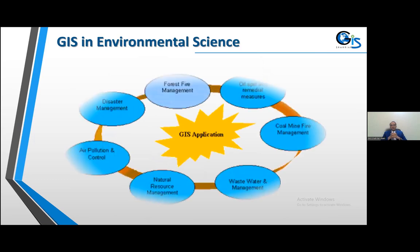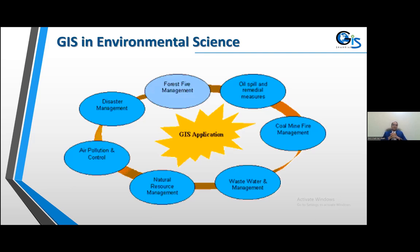Now let's see GIS in environmental science. GIS is already being used in environmental science. GIS applications are being used in forest fire management, oil spill and remedial measures, coal mine fire management, wastewater management, natural resource management, air pollution and control, disaster management, and many more.